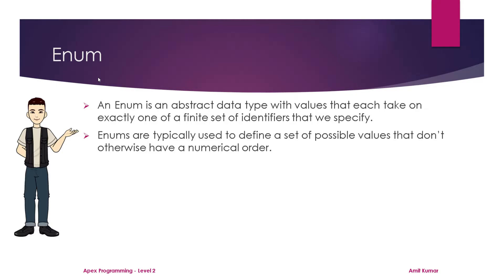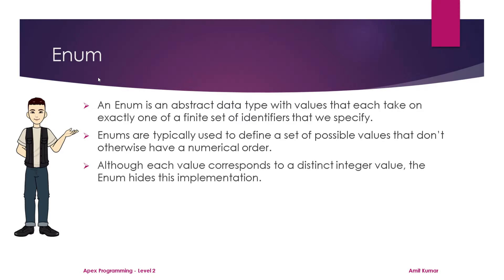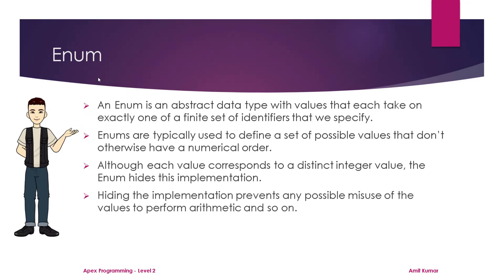Enums are typically used to define a set of possible values that don't otherwise have a numerical order. Although each value corresponds to a distinct integer value, the Enum hides this implementation, which prevents any possible misuse of the values to perform arithmetic and so on.